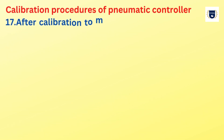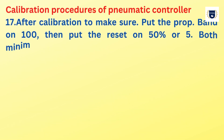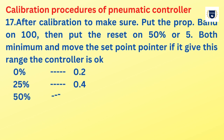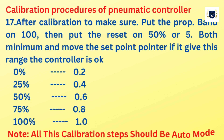After calibration, to make sure: put the proportional band on 100, then put the reset on 50% or 5. Move the set point pointer — if it gives this range, the controller is okay: 0% = 0.2 bar, 25% = 0.4 bar, 50% = 0.6 bar, 75% = 0.8 bar, 100% = 1.0 bar. Note: all calibration steps should be in auto mode.